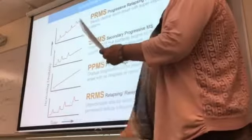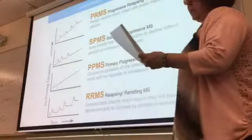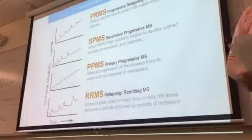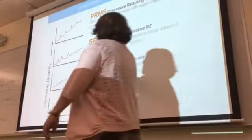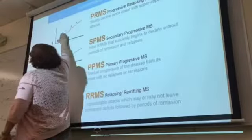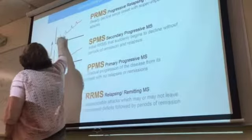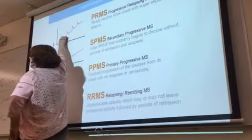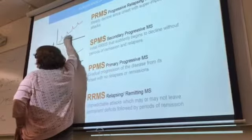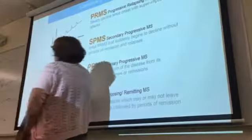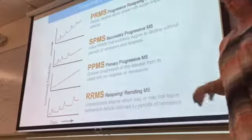The fourth type is progressive relapsing, about 10 percent. These patients have a progressive course right from the beginning, but also experience symptom spikes where they need hospitalization and IV steroids, then return to that progressive slope — just four different types overall.